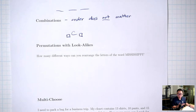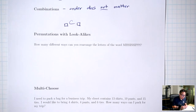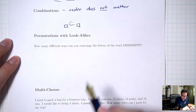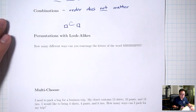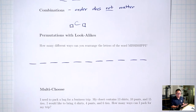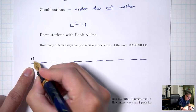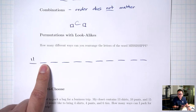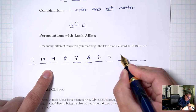The way you deal with permutations with look-alikes is the same as a regular permutation to start: figure out how many blanks you need. Here I'm rearranging the letters of the word Mississippi, which means I should end up with the same number of characters. Counting the letters: one through eleven — so eleven letters total, meaning I should have eleven blanks. For the first blank I have eleven options, then ten, nine, eight, seven, six, five, four, three, two, one.